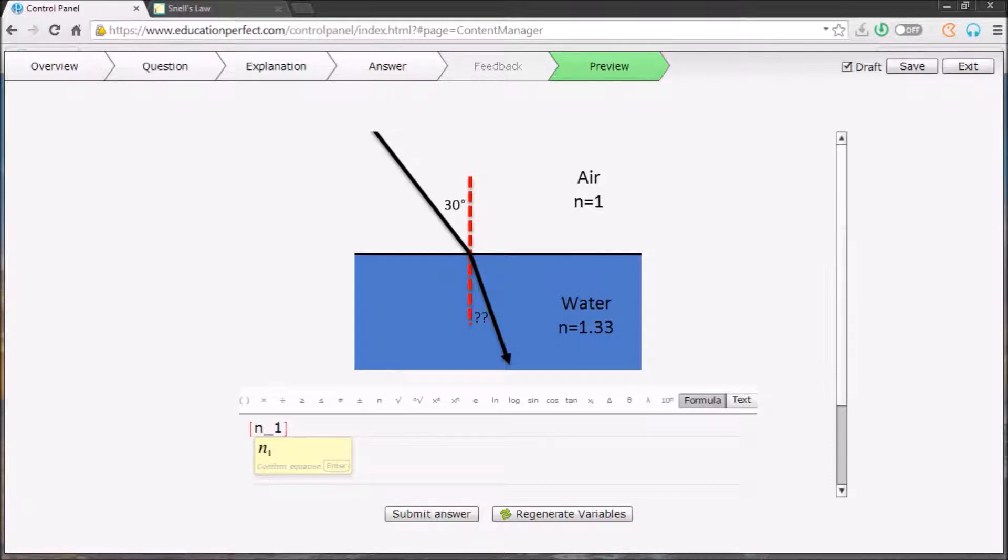Here's our situation: a ray of light in black hits the interface between air and water at an angle of 30 degrees to the normal line. The refractive index of air is 1 and the refractive index of water is 1.33, so we write n1 equals 1.